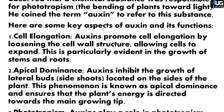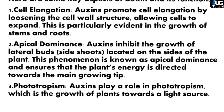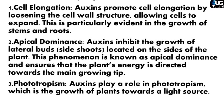2. Apical Dominance: Auxins inhibit the growth of lateral buds — side shoots — located on the sides of the plant. This phenomenon is known as apical dominance and ensures that the plant's energy is directed towards the main growing tip.